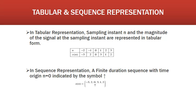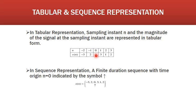The next type is tabular representation. In tabular representation, the sampling instant n and the magnitude of the signal x(n) are represented in tabular form. From this table, we can note that at n = -2 the amplitude is -3, at n = -1 the amplitude is 2, and at n = 0 the amplitude is 0. Likewise, we can find the values of x(n) for different values of n.